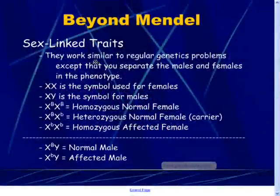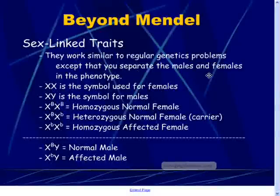These traits work similarly to regular Punnett square problems except that you're going to separate males and females. So we're going to talk about males and females separately when we get to phenotype.